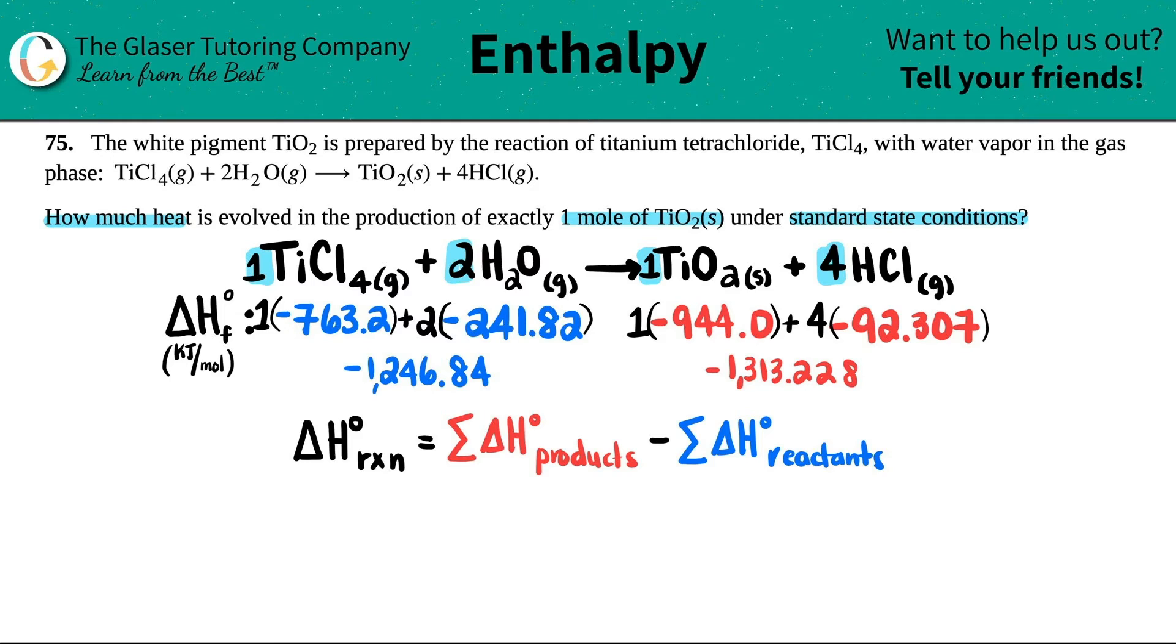Now it's just products minus reactants. How simple is that? So the whole delta H for my whole reaction is the product number, negative 1,313.228, and I'm going to minus the reactants, negative 1,246.84. Keep change change when you're minusing a negative. This is just like adding. And I get negative 66.388, and that's kilojoules.